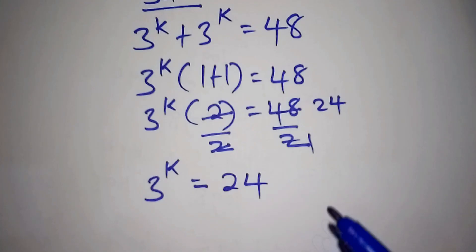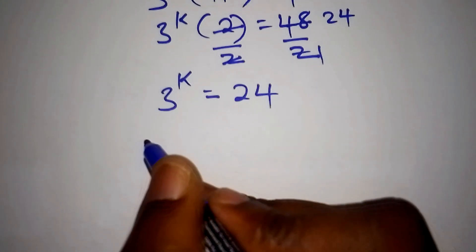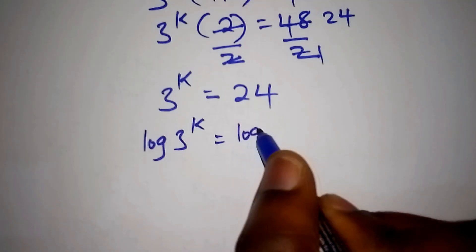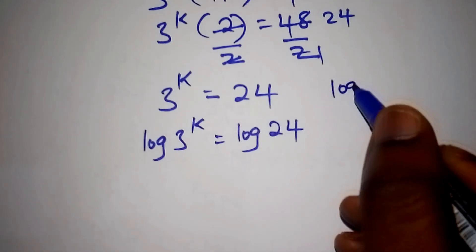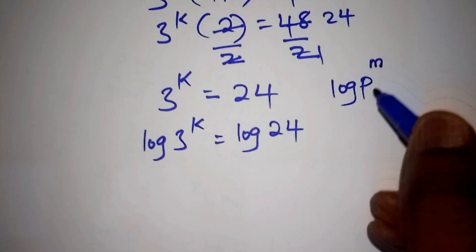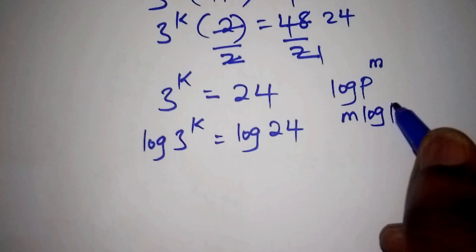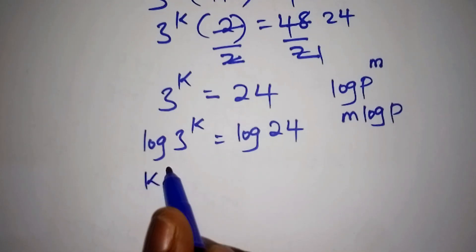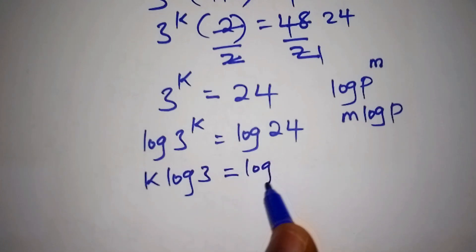To solve for k correctly, we introduce the log on both sides. So we have log of 3 to the power of k is equal to log of 24. Using the log power rule — log of p to the power of m equals m times log of p — we rewrite this as k times log of 3 is equal to log of 24.